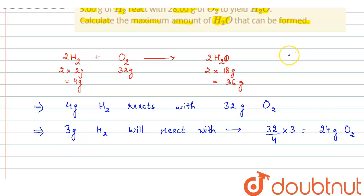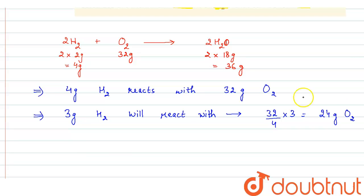But we are given 28 gram O2. So O2 is in excess and H2 is given in limited amount.